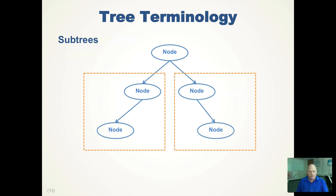Subtrees are basically the successors of a node. In this example, the root node has two subtrees: the left subtree and the right subtree. The left subtree has a node and then it has a subtree. The leaf node has no subtree because there are no children of the leaf node.